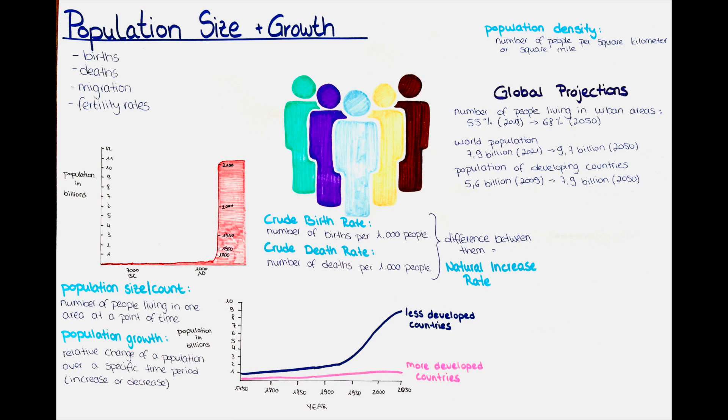The global average crude birth rate is around 18 births per 1,000 per year and the global average crude death rate is around 8 deaths per 1,000 per year. In comparison, the average crude birth rate in Europe is around 10 to 12 per 1,000 of a population per year and the average crude death rate in Europe is around 10 to 12 deaths per 1,000 of a population per year.